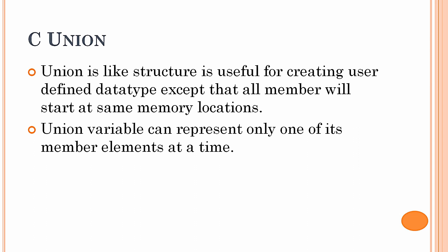The methodology for declaring and defining a union is the same as for a structure. Union variables can represent only one of its member elements at a time — that is, union uses shared memory, so you can access and use only one element of the union at a time in your program because it uses a shared memory location.